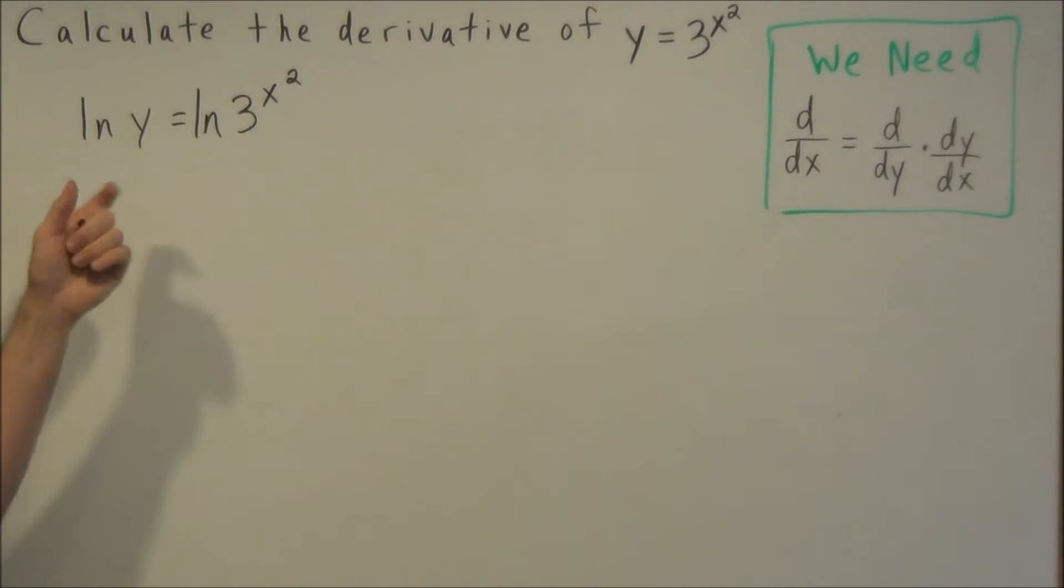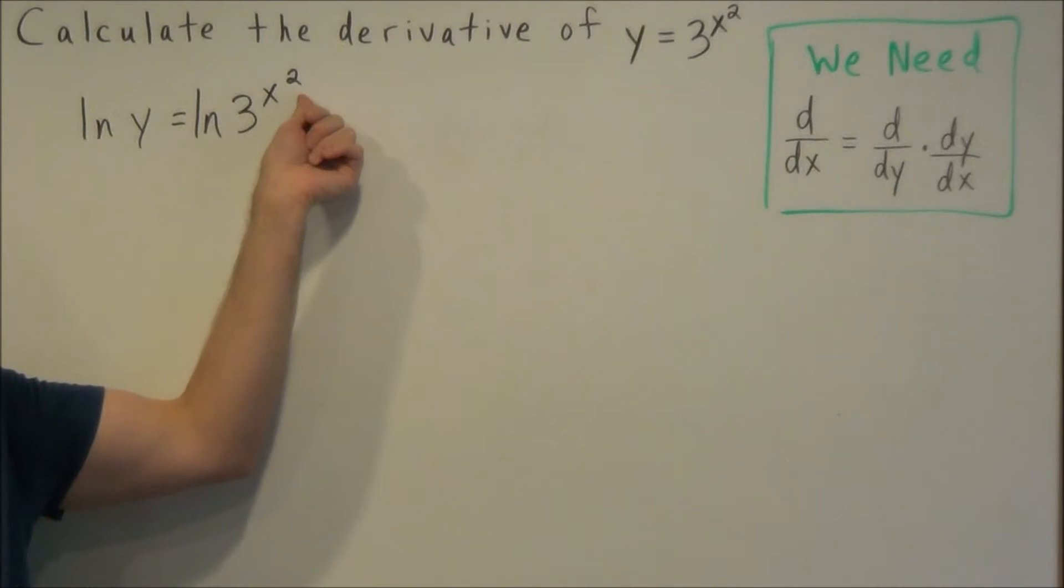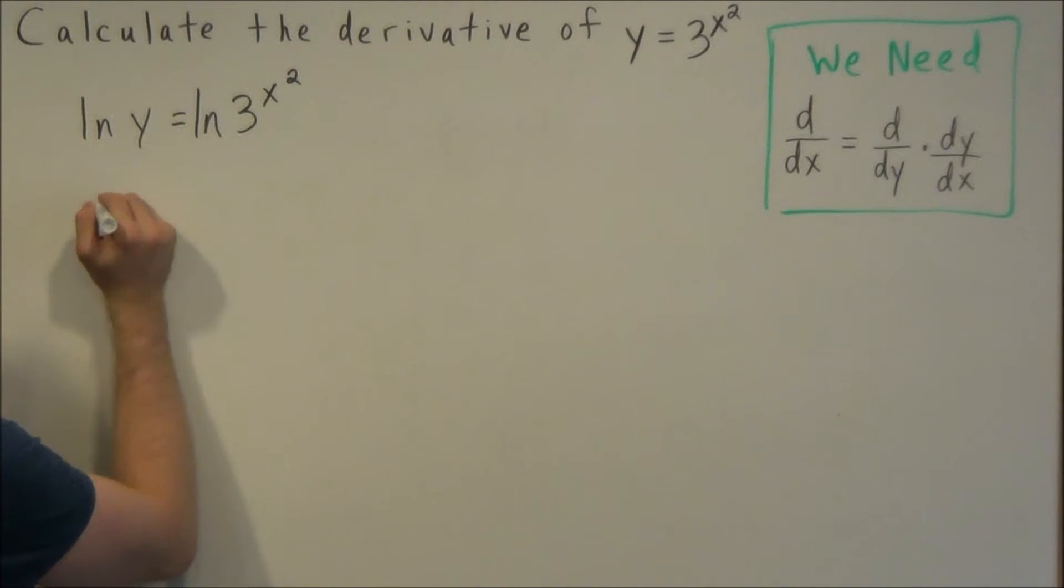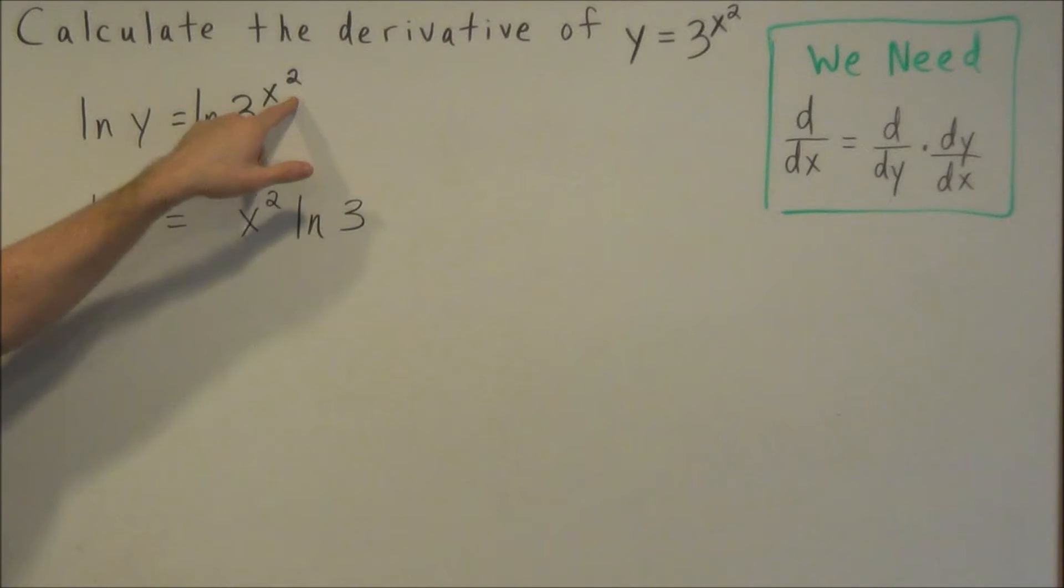Okay, with this function now, we could use the property of logarithms and take x squared and bring it in front as a coefficient. So for the next line, we have natural log of y equals x squared times natural log 3. So we're just using properties of logs here and bringing this exponent out in front as a coefficient.